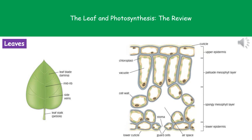Welcome to our review on the leaf and photosynthesis. We've got two diagrams to be familiar with. On the left we've got the main structures you'll see from looking at the actual surface of our leaf — the stalk, the veins, the midrib, and the leaf blade.